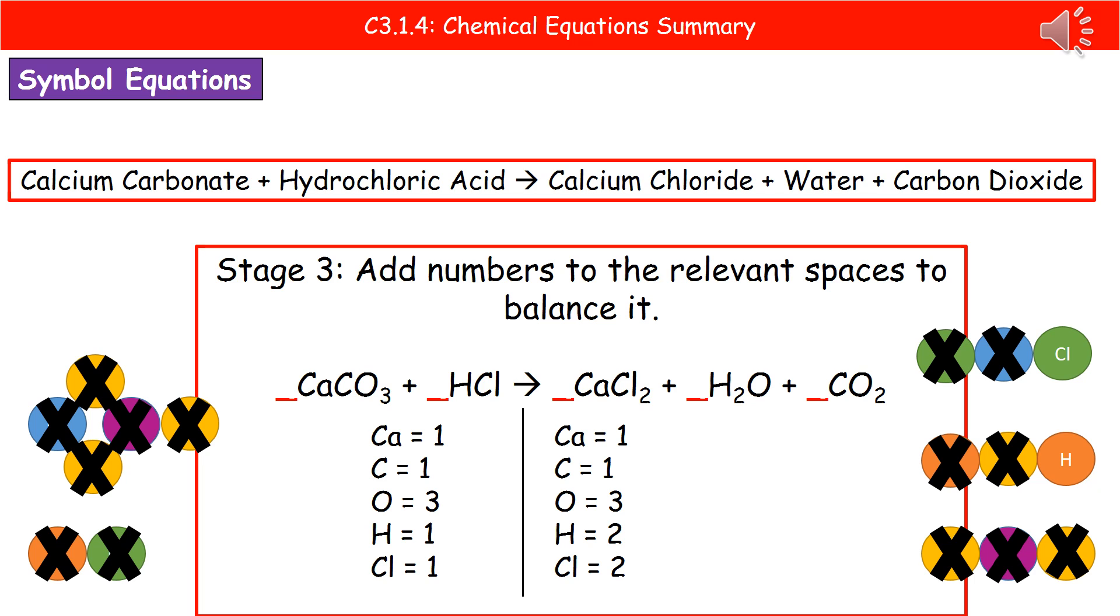So what we need to do is work out what number we put in, and the key thing here is where that number can go. I've put little red lines in front of each of those chemical formulae. That's the only place you can put a number to balance it. You can't put it in the middle of the compound because you would then completely change the chemical formula. It can only go in front of the compounds, and that means it's multiplying that entire formula by that number.